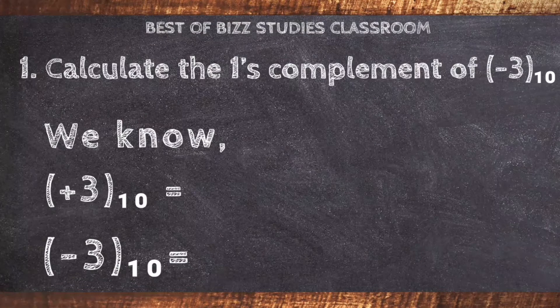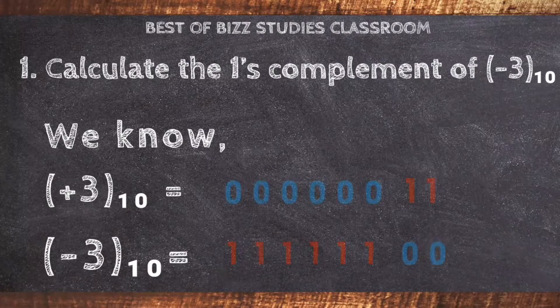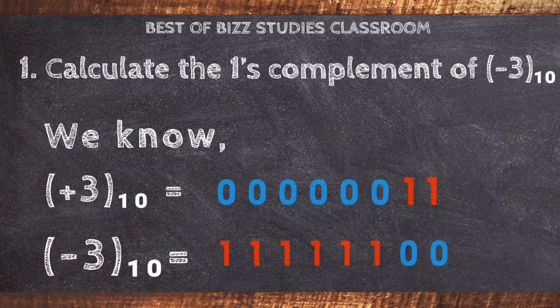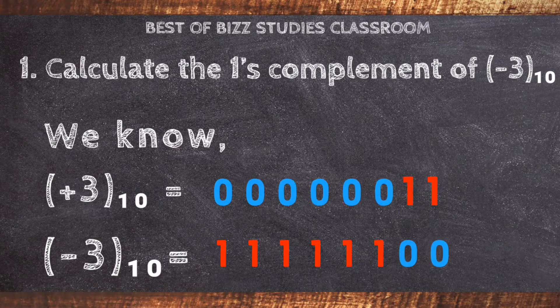Problem number 1: calculate the 1's complement of minus 3. Normal method — we convert 3 into binary digits, then transform the 0 bit to 1 and the 1 bit to 0.